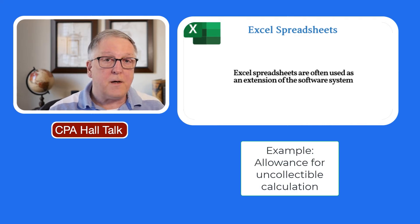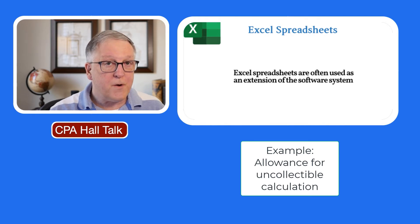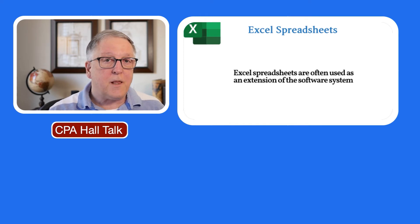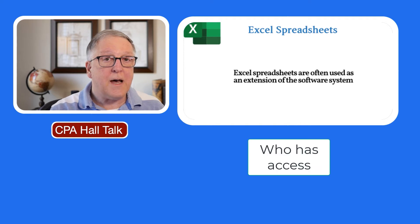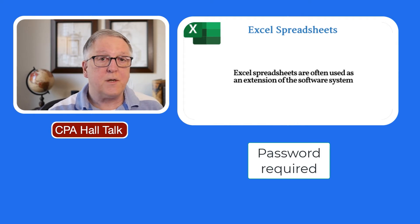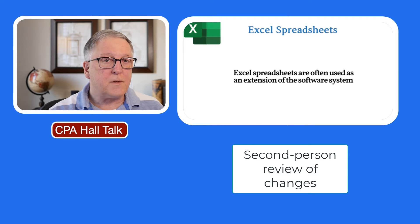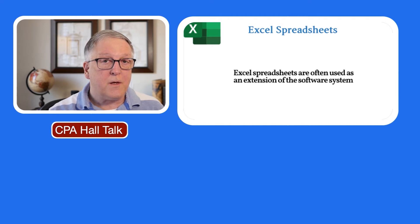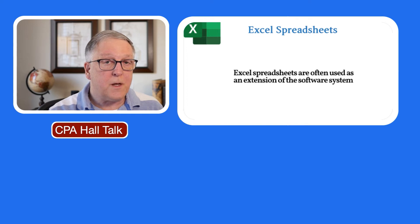Quite often I've seen clients use a spreadsheet to compute the allowance for uncollectibles, and some of those spreadsheets are fairly simple while others are very complicated. When I see a spreadsheet like that, I want to know who has access to it, whether a password is required, and if changes are made, whether a second person reviews those changes to ensure they are appropriate. We need to be aware of internal controls in relation to spreadsheets and understand how they're being used and how they impact the financial statements.